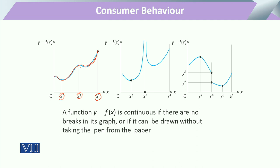This is the continuous line that will express consumer behavior. So the function y = f(x) is a continuous line, and this is only possible when there is no break in it. If there is a break anywhere, we cannot express it in functional form. And if we cannot express it in functional form, then in optimization — when we explain the change in y with change in x and calculate the first derivative — if it is not in continuous form, we cannot explain it.